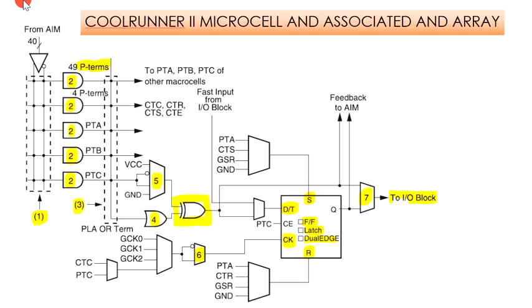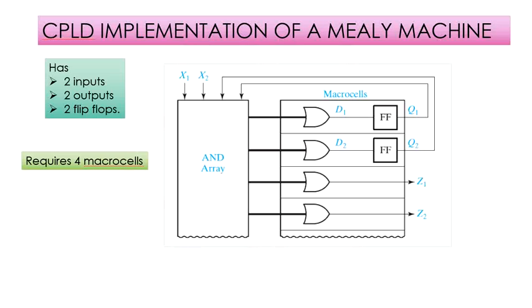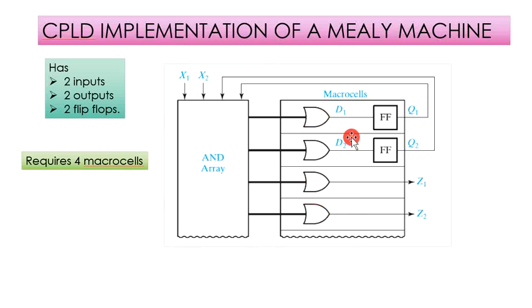Next we have the CPLD implementation of a Mealy machine. This Mealy machine has two inputs and two outputs, and makes use of two flip-flops implemented via the CPLD. A total of four macro cells are required: two to generate the D inputs to the flip-flops and two to generate the Z outputs. The flip-flop outputs are fed back to the AND array inputs via the interconnection matrix, and the number of product terms required depends on the complexity of the equations for D and Z.